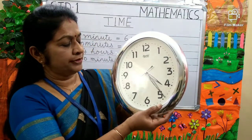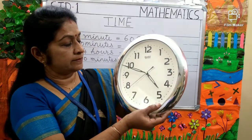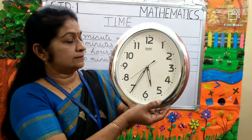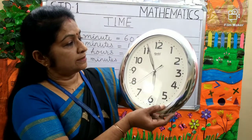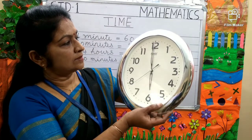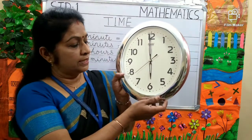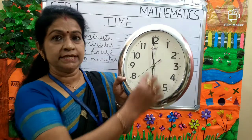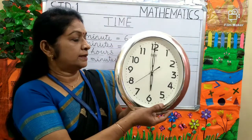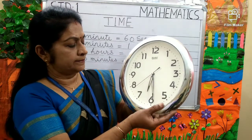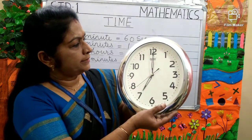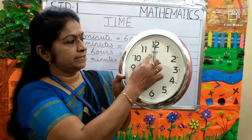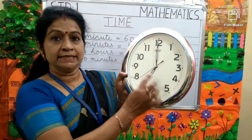Again this minute hand is moving round the clock. Can you tell me the time now? The hour hand is on 6 and the minute hand is on 12. So, the time is 6 o'clock. Can you tell me the time now? The hour hand is on 7 and the minute hand is on 12. So, the time is 7 o'clock.